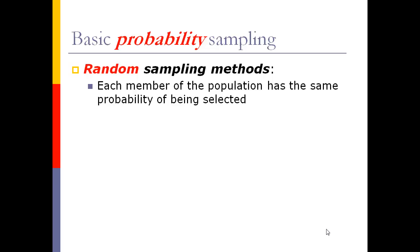Certain randomization methods don't achieve that, so they are not true random sampling methods, but they are randomized in the sense that every individual has a certain known probability of being selected. We may know in advance that some people have more probability of being selected than others, and that's okay — but we want to be aware of those different probabilities. A random sampling method specifically means every member of the population has the same probability of being selected.